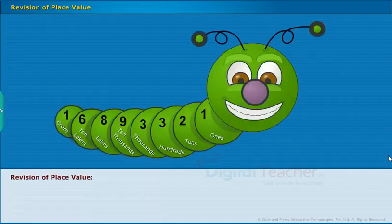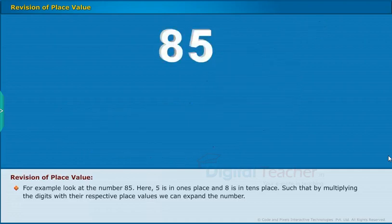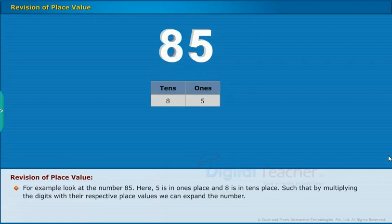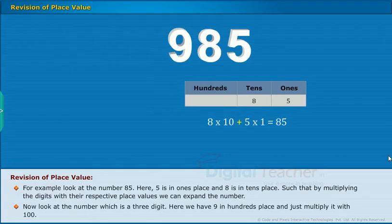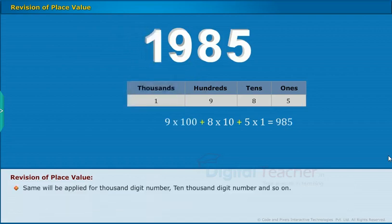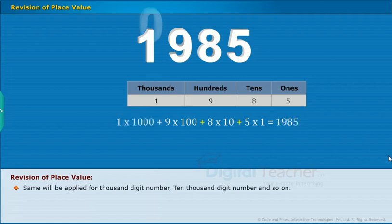Let us revise the concept how to expand a number using place value. For example, look at the number 85. Here, 5 is in 1's place and 8 is in 10's place, such that by multiplying the digits with their respective place values, we can expand the number. Now, look at the number which is a 3-digit. Here, we have 9 in 100's place and just multiply it with 100. Same will be applied for 1,000-digit number, 10,000-digit number and so on.